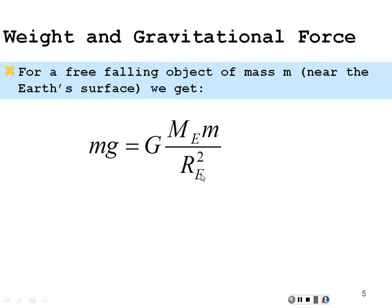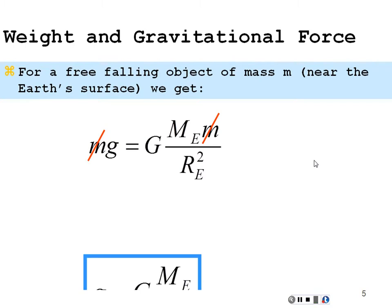So if you're anywhere near the surface of the earth, your weight — mass times little g, 9.80 meters per second squared — is really due to the gravitational attractive force between you and the earth at a distance of the earth's radius. If you cancel out the mass, you get a value for little g. Little g is actually based on physical phenomena: the gravitational constant, the mass of the earth, and the radius of the earth squared.